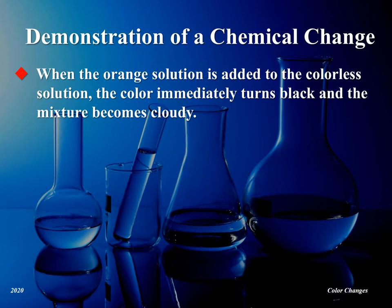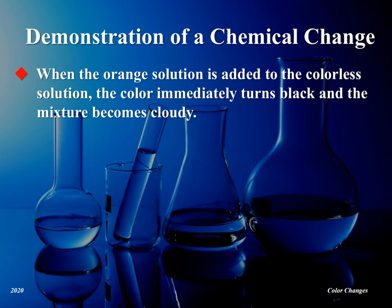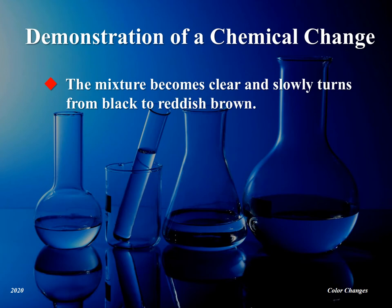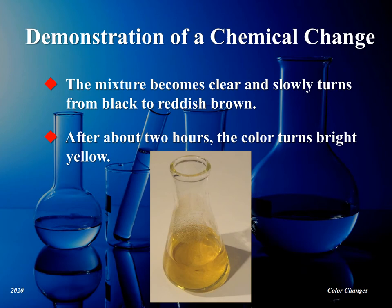When 10 milliliters of the orange solution is added to the flask containing the clear hydrogen peroxide solution, the color immediately turns black and the mixture becomes cloudy. After a short time, bubbles begin to appear and soon the bubbling becomes vigorous, while the flask becomes warm to the touch. In a few minutes, the mixture becomes clear and then slowly turns from black to reddish brown. After the flask sits for about two hours, you will observe that the color gradually becomes a bright yellow.